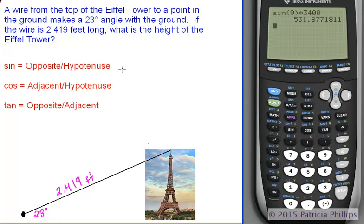You can start by drawing your little tower as the length of the side of a triangle that is opposite of a 23 degree angle. Your hypotenuse will be 2,419 feet or the length of that wire that's stretching from the top of the Eiffel Tower to the ground. Since we have our opposite as the missing value and our hypotenuse is 2,419, we're going to use the sine function to solve this problem.